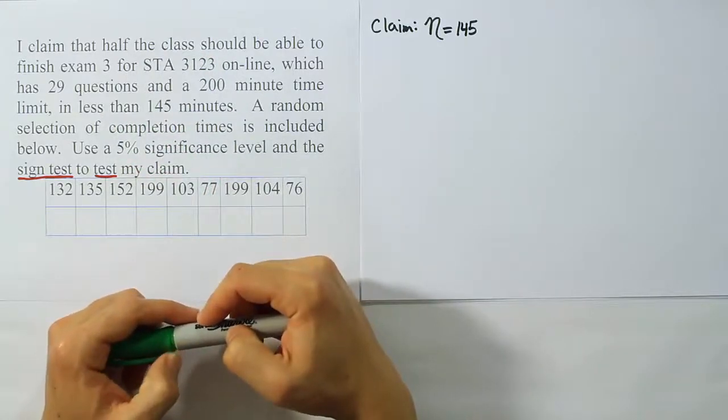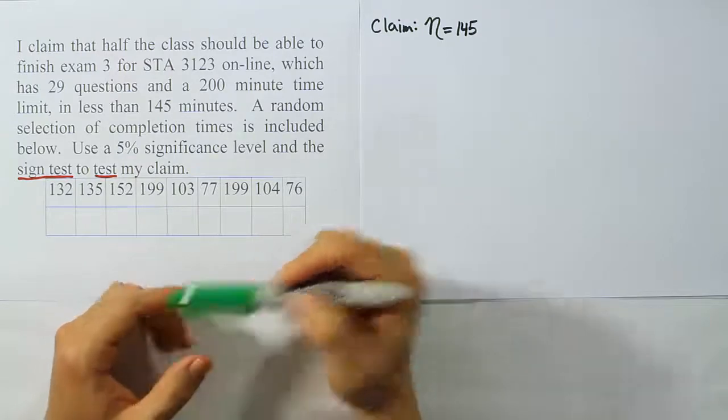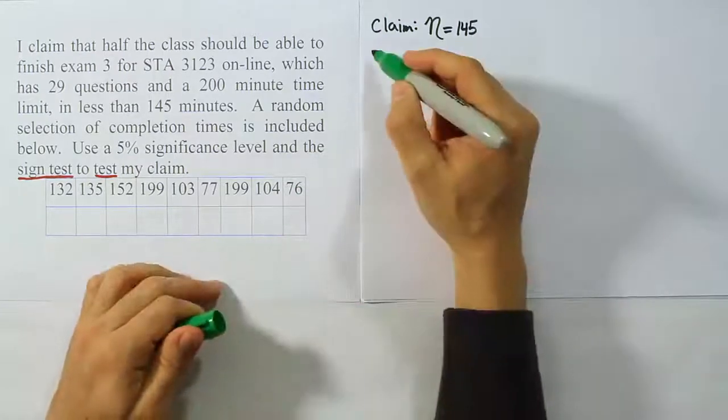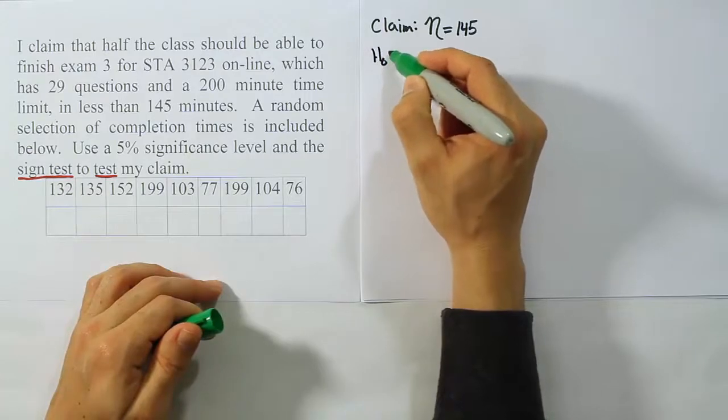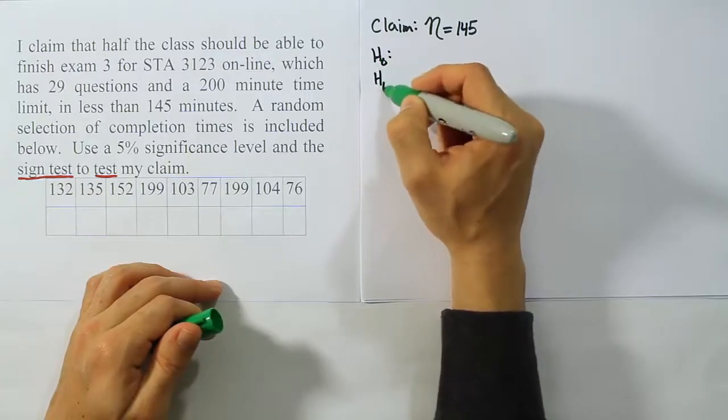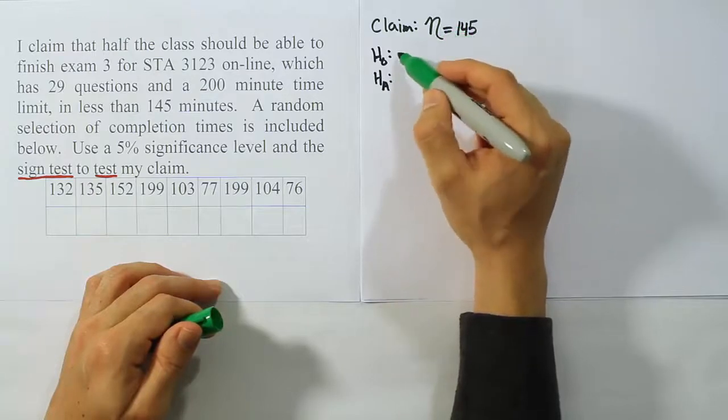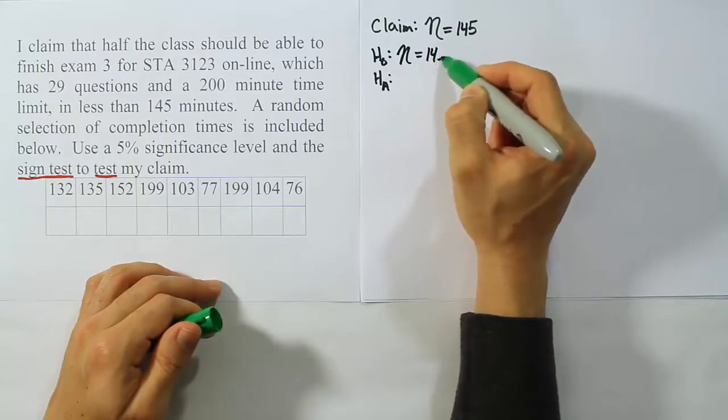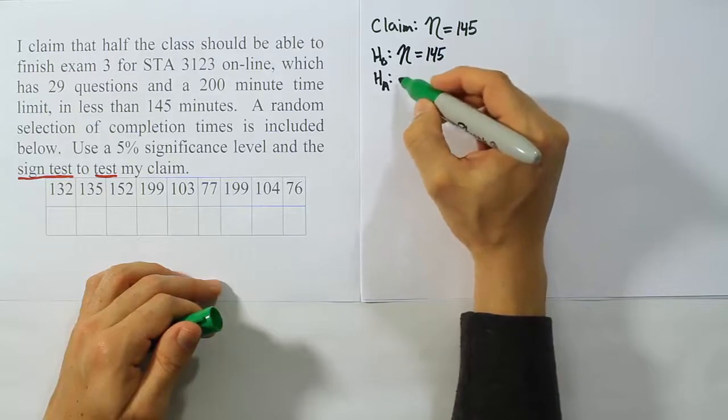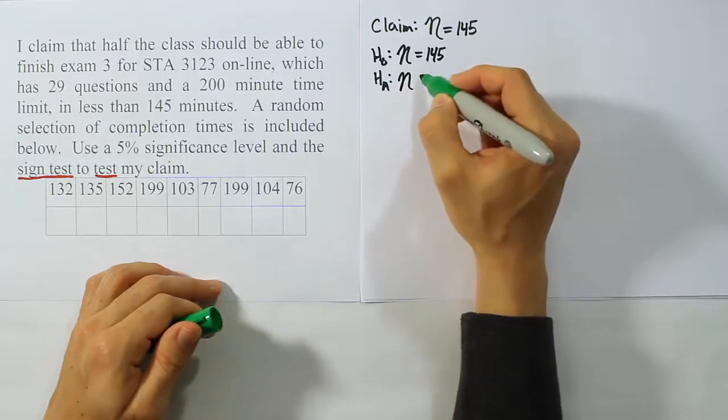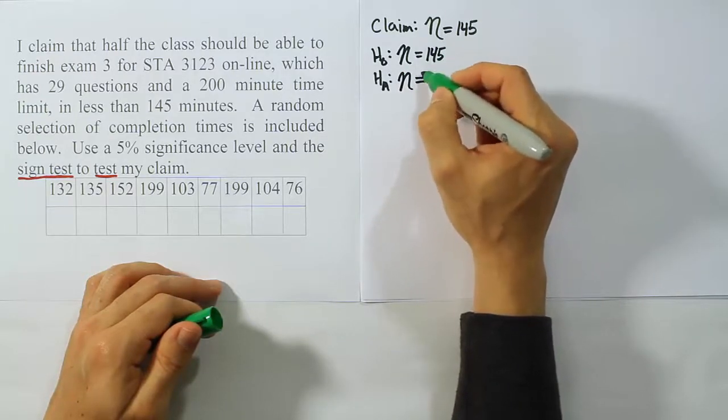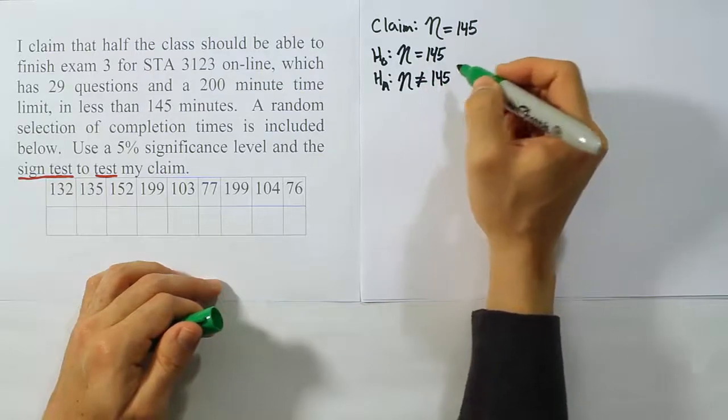So now, at this point, what we're going to do is go ahead and get H0 and HA like we always do. And it's very simple when we're dealing with the sign test. We use the same procedure as always. If this is an equal sign here, then H0 and the claim are the same. And of course, HA then would have to express the opposite idea. So the opposite of equal to is not equal to.